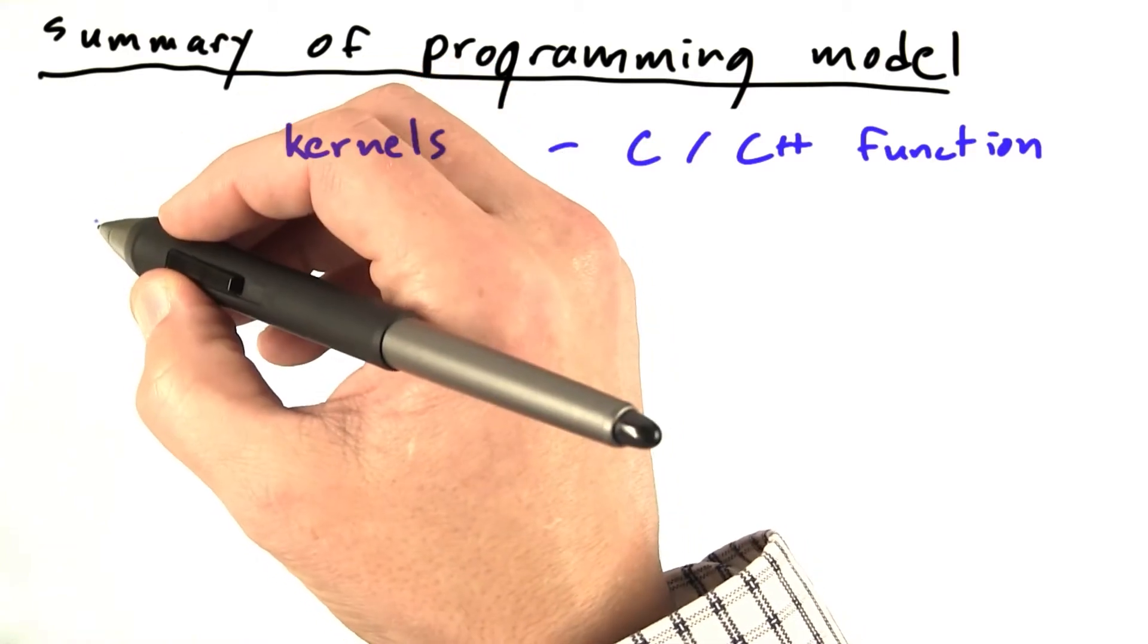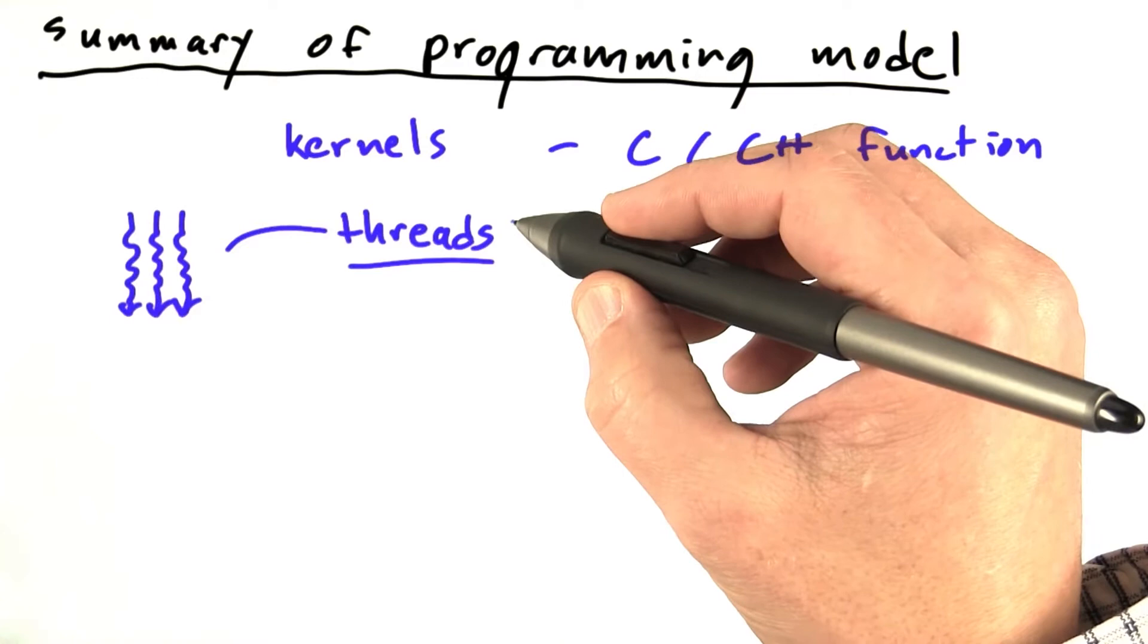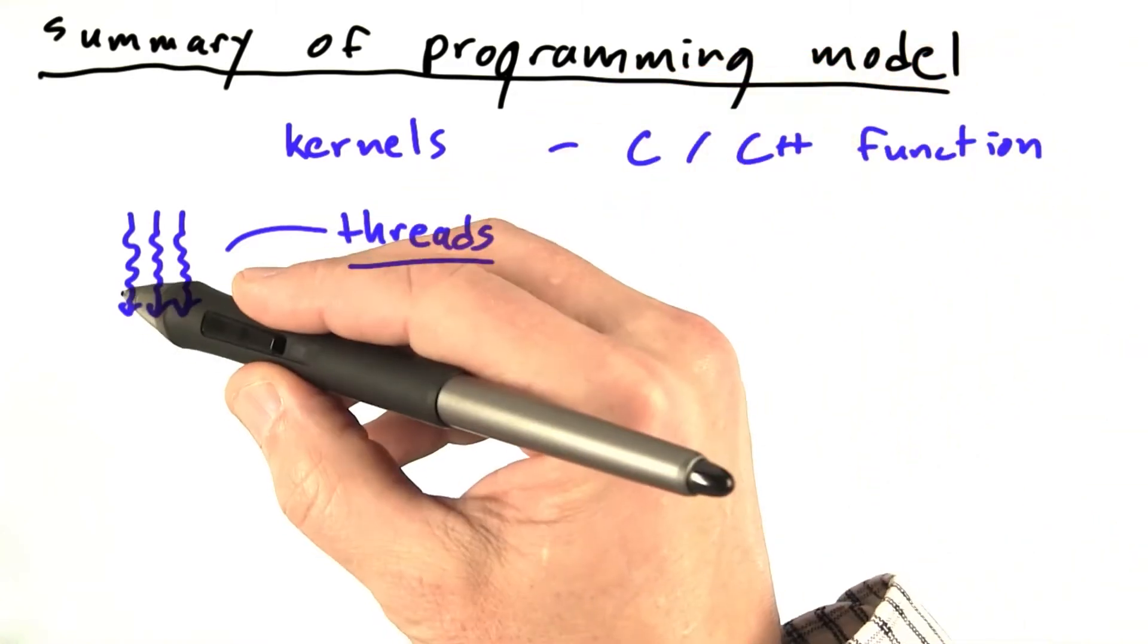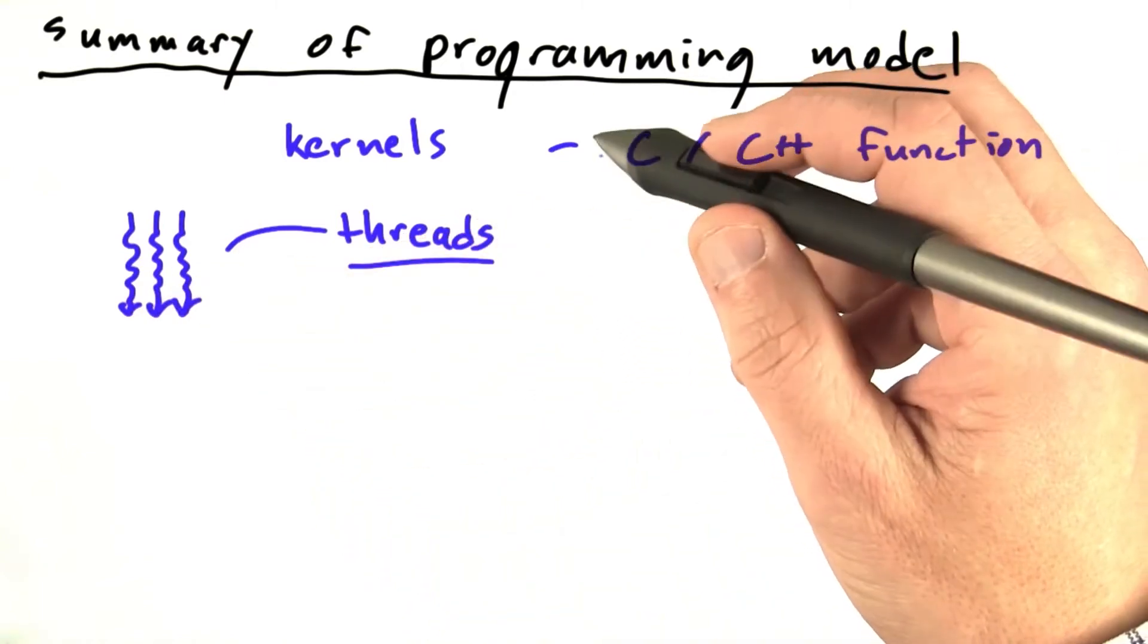And the key idea of a kernel is that it's going to be performed by many threads. So a thread is a path of execution, a thread of execution through the program code. And I've drawn them as wiggly lines here because they're not necessarily all going to take the same path through that code.